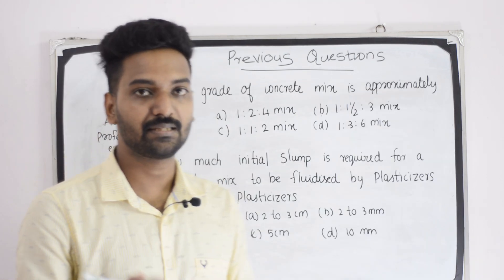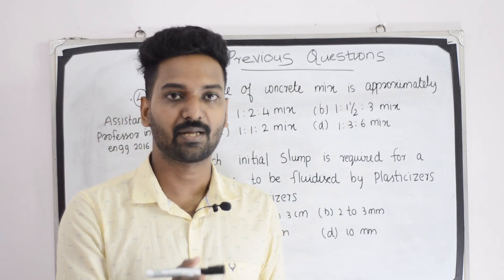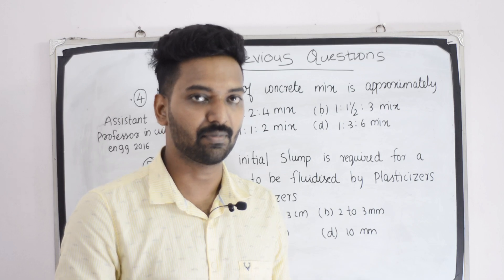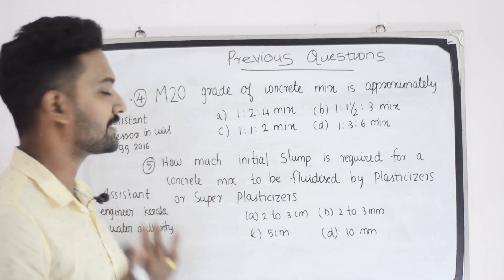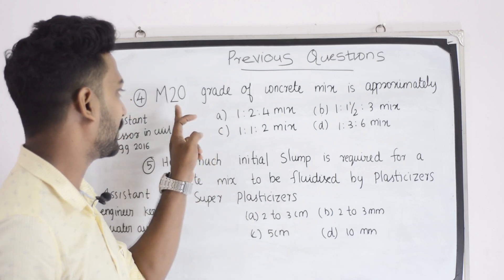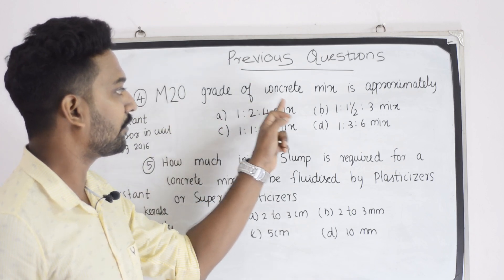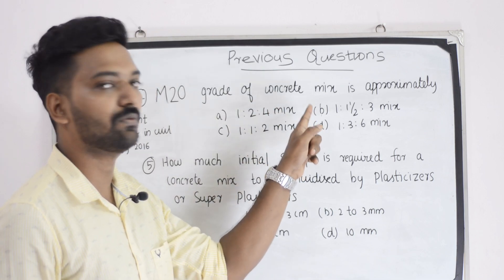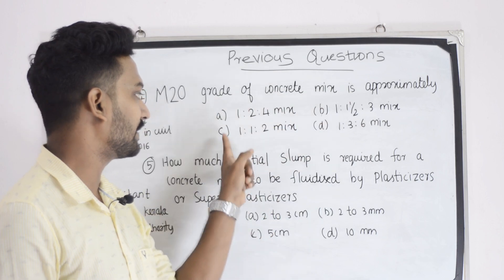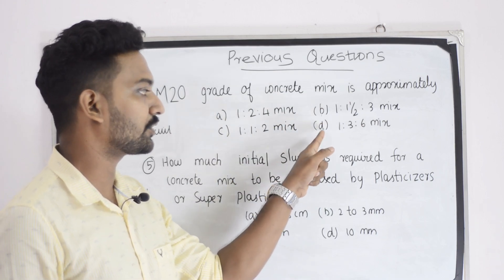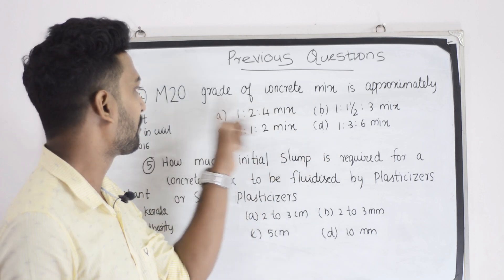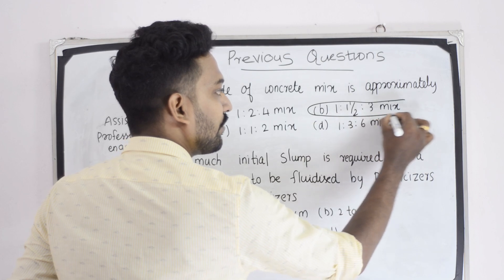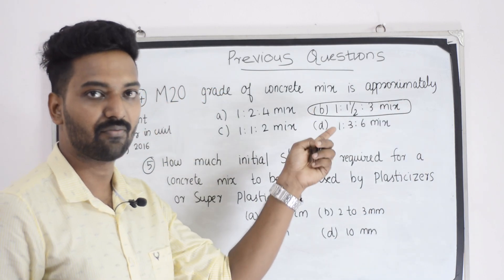We have a grade in the table for the concrete class. The M20 grade of concrete mix is approximately — first option, one is to two is to four mix. Second option, one is to one and a half is to three mix. Third option, one is to one is to two mix. And fourth option, one is to three is to six mix. The answer is one is to one and a half is to three.